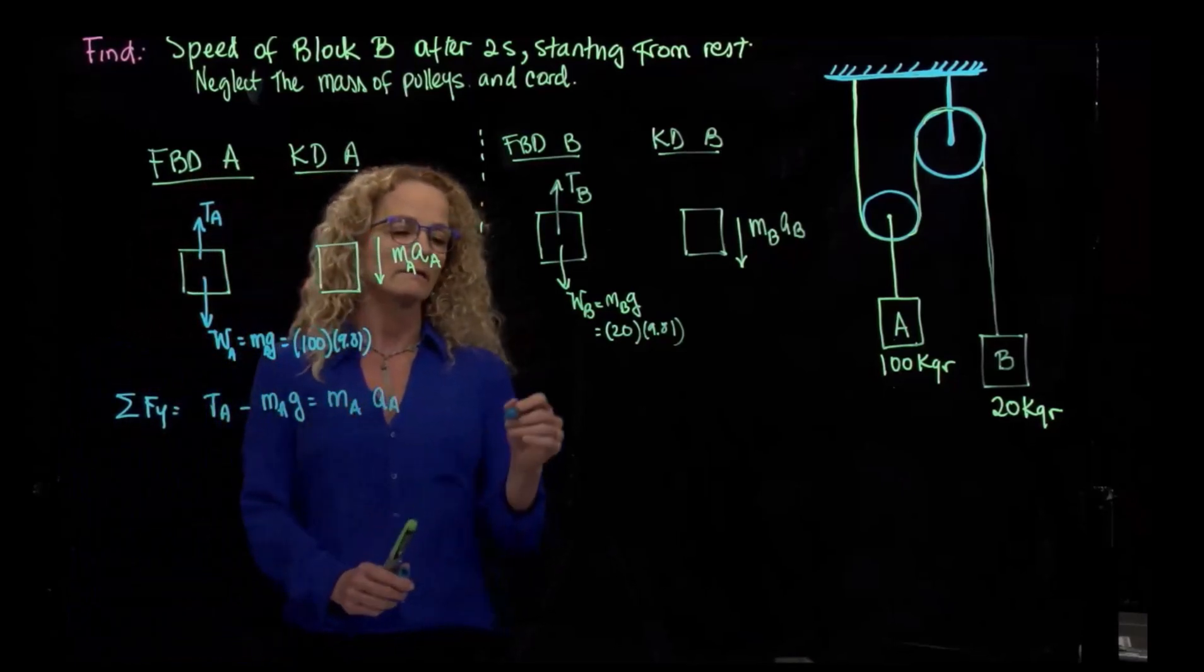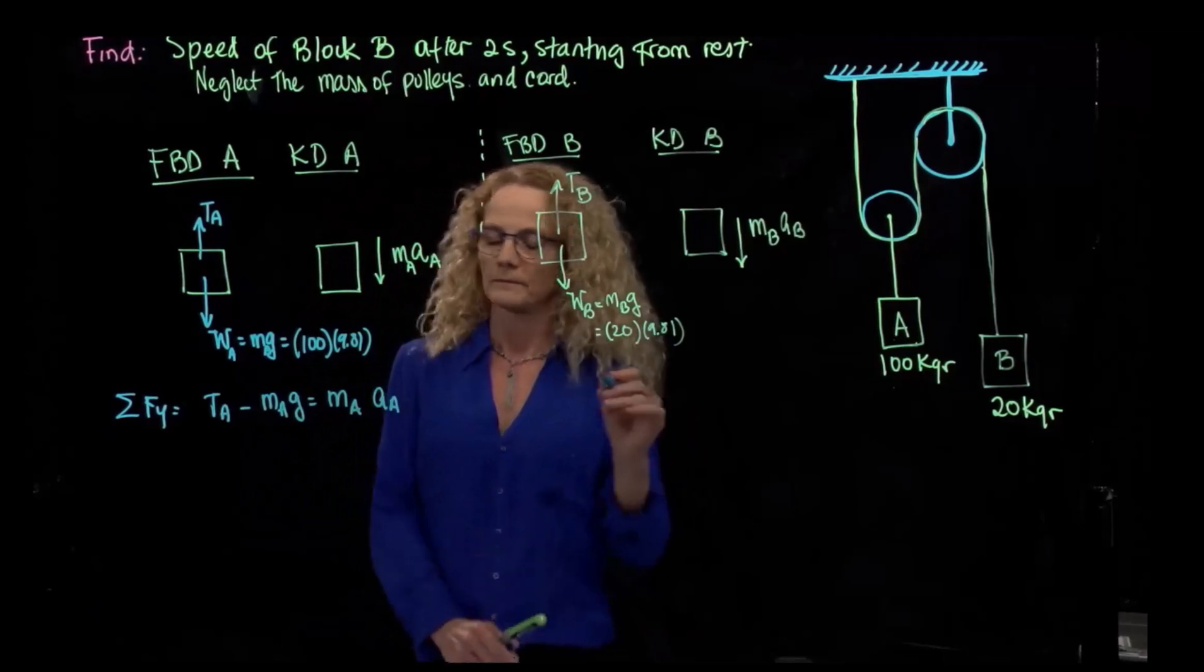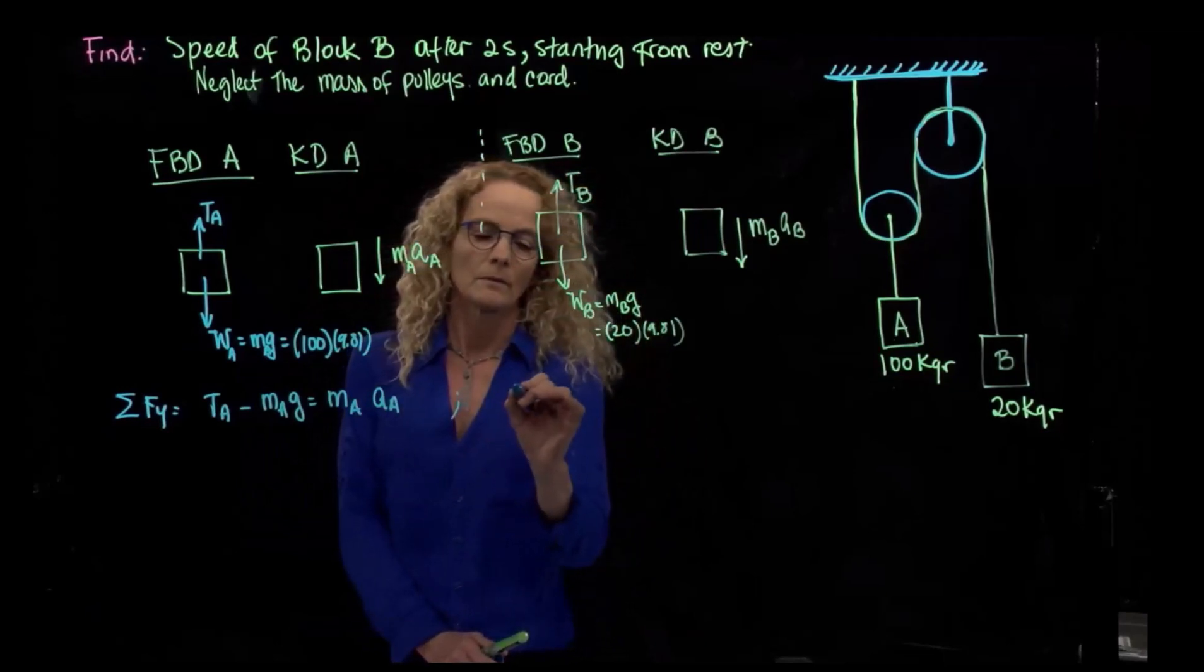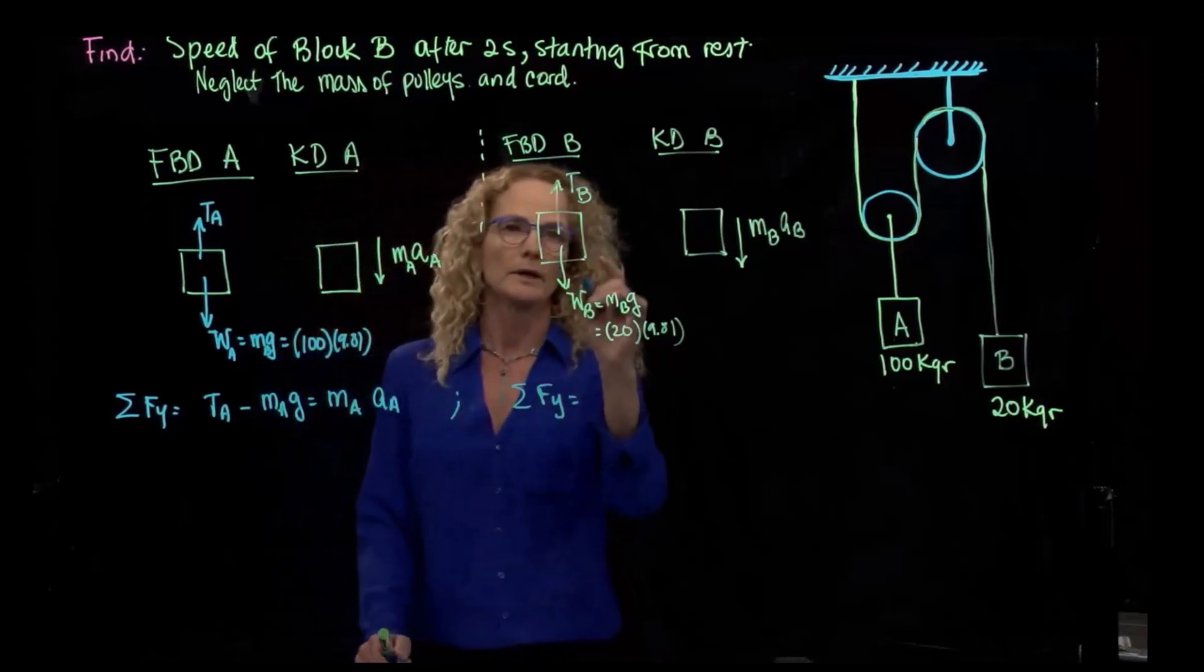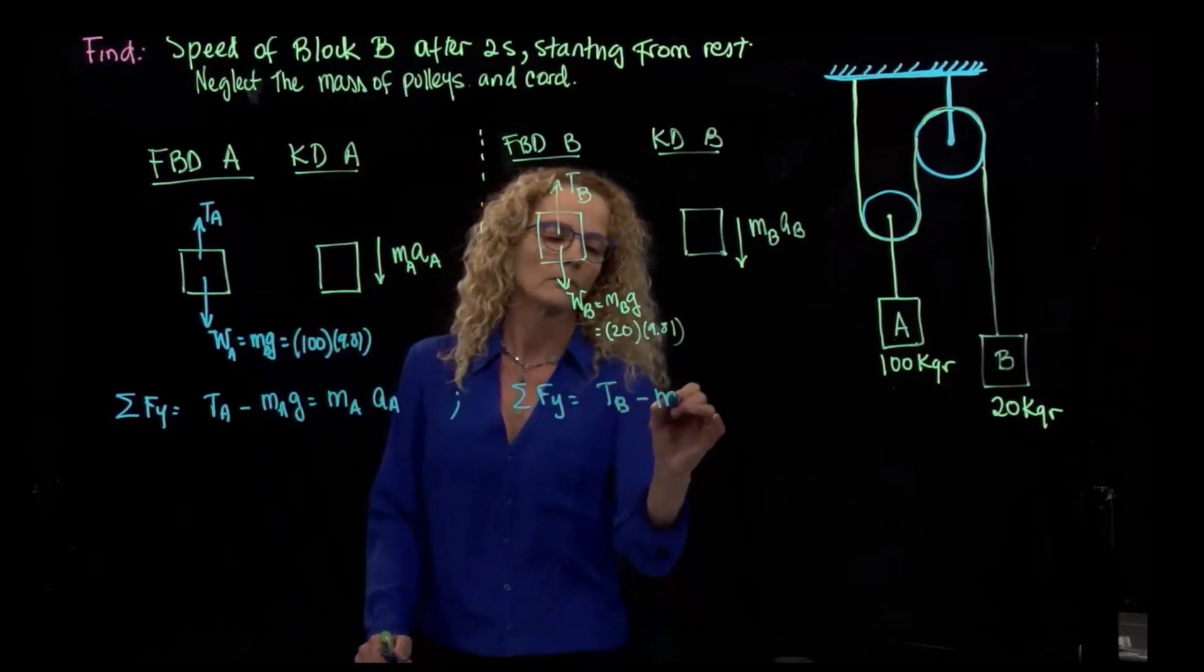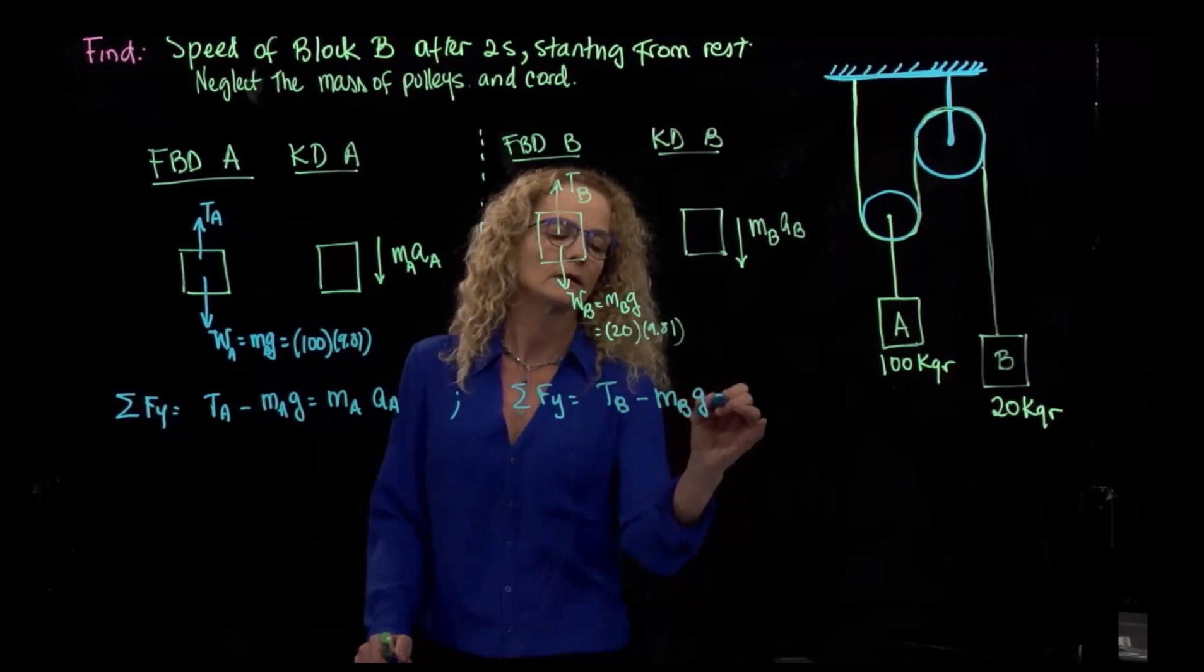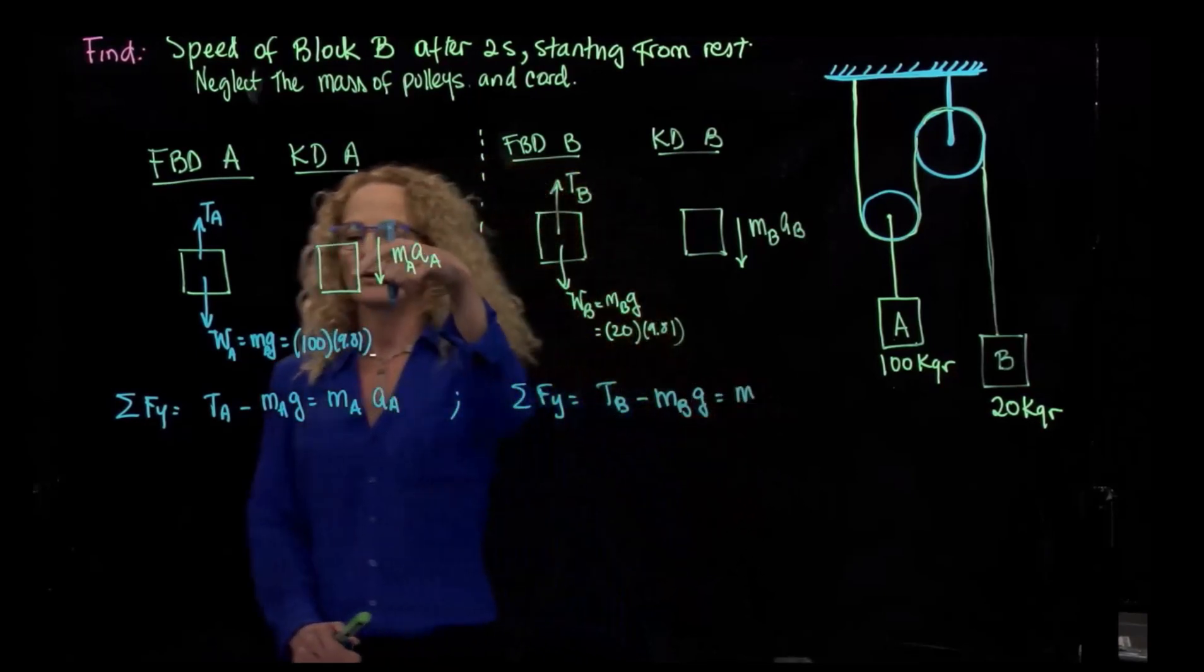And in this case, we have also forces in A, and we have TB minus mass B times gravity equals, and I'm going to, so I name that positive because I put positive here, so I actually have to add a negative here.